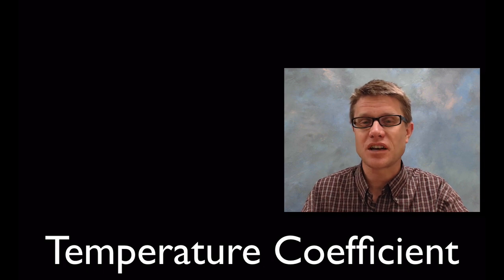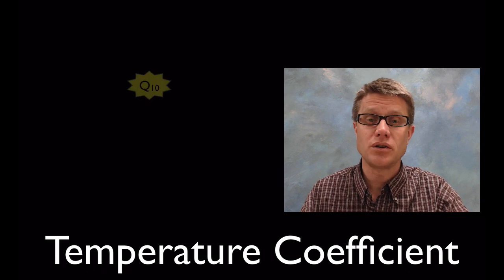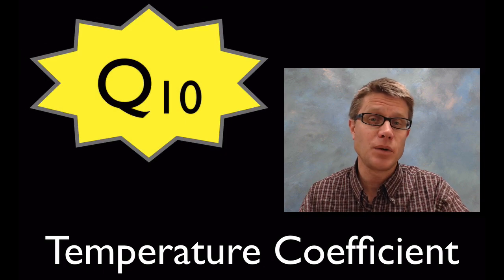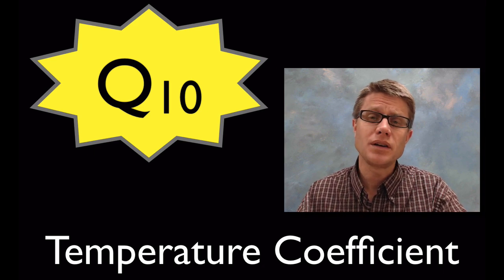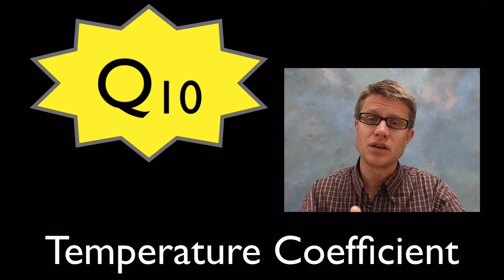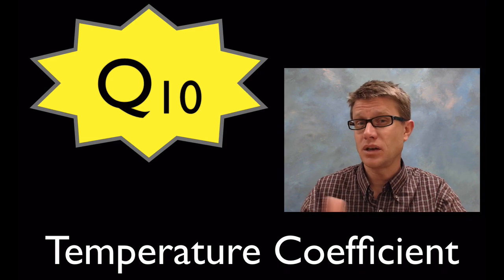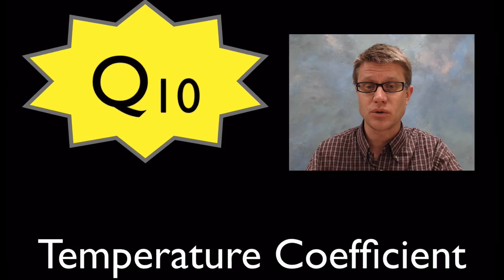Hi, it's Mr. Andersen and in this video I'm going to talk about the temperature coefficient or Q10. This was added to AP Biology this year and to be honest I'd never even heard of it before. But what it is is a ratio. It allows us to see what happens to the rate of reaction as we increase temperature 10 degrees. That's where the 10 comes from.